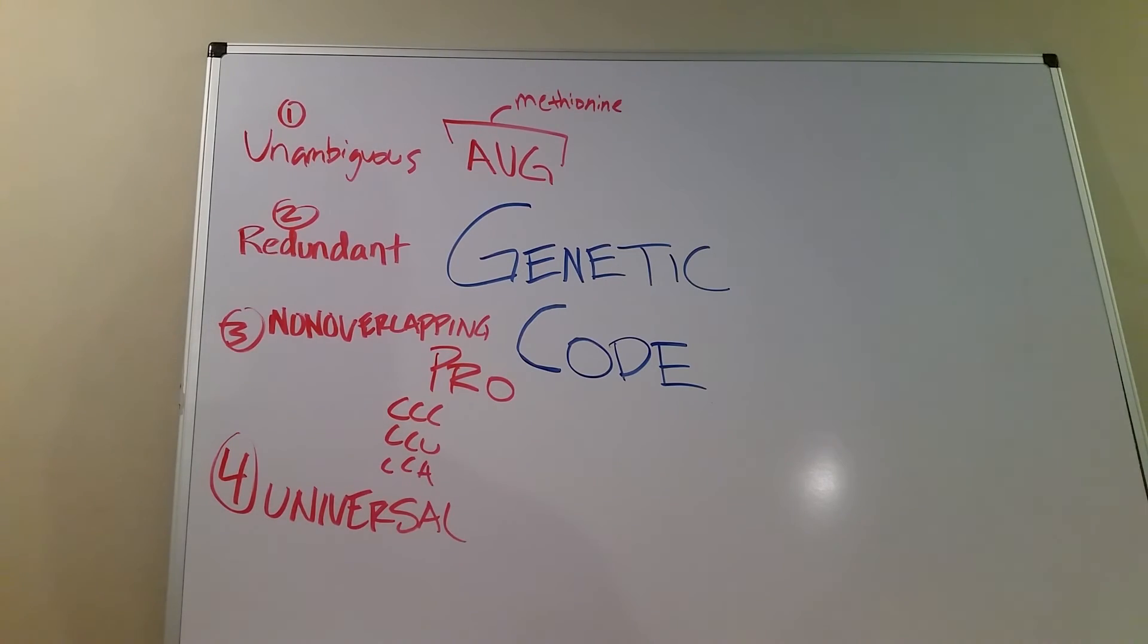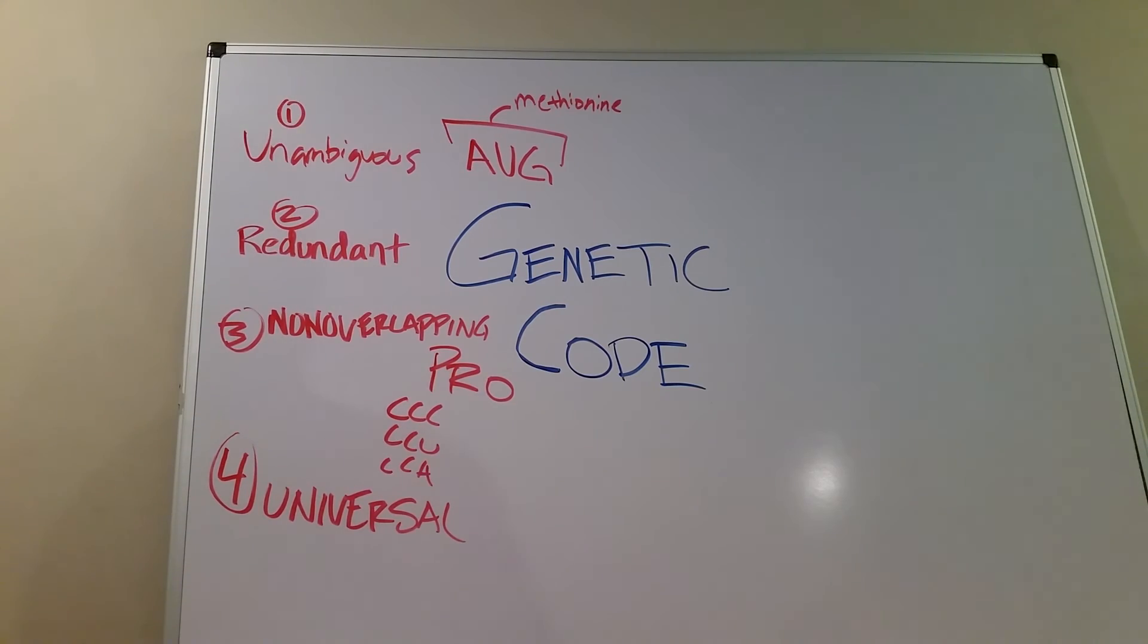I do really quick, I mentioned earlier, there are some exceptions to these rules. And they actually kind of have biological purpose or evolutionary purpose, that's why they exist. The first one I want to talk about is with this redundancy or degeneracy. There's only one way to code for methionine and tryptophan.